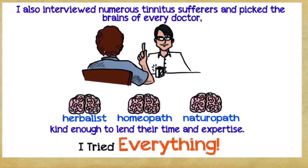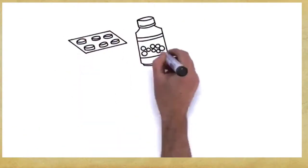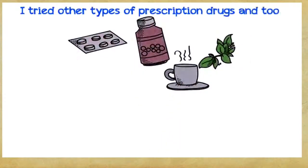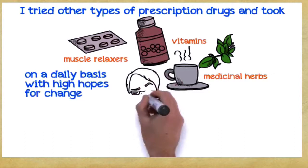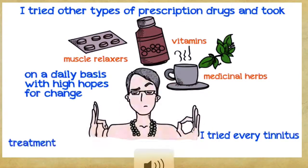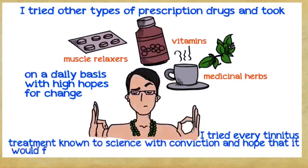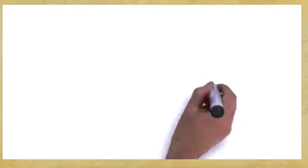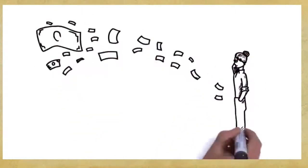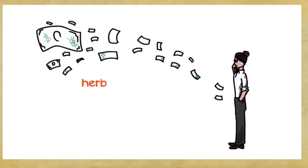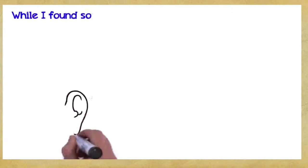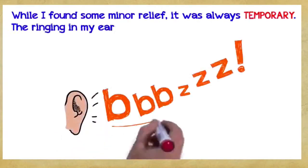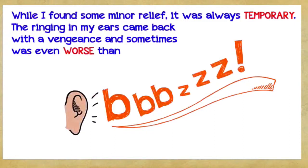I tried everything. I tried other types of prescription drugs and took more muscle relaxers, vitamins, and medicinal herbs on a daily basis with high hopes for change. I bought numerous white noise CDs and did plenty of noise therapies, but to no avail. Over the years, I spent a small fortune trying every type of product and treatment you could possibly think of—herbal remedies, tonics, habituation, detox diets, vitamin therapy, and so on. While I found some minor relief, it was always temporary. The ringing in my ears came back with a vengeance and sometimes was even worse than before treatment.